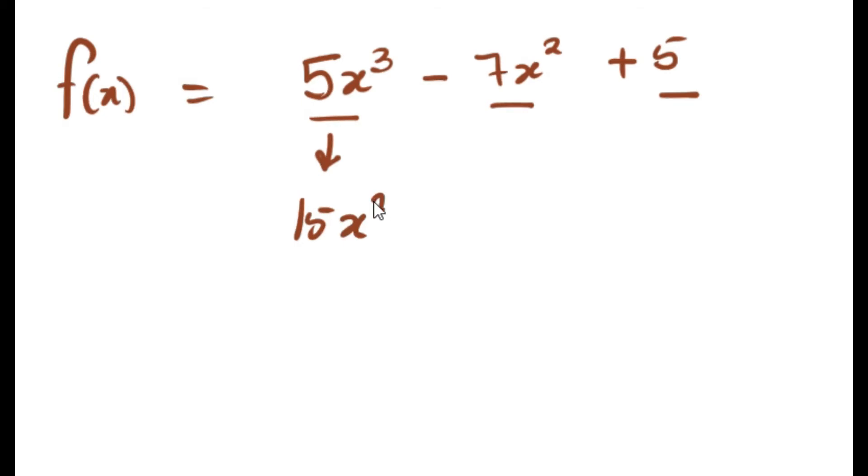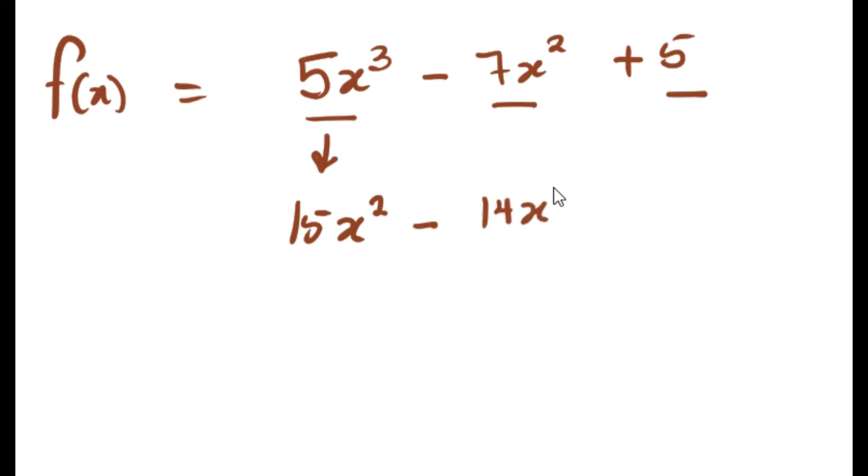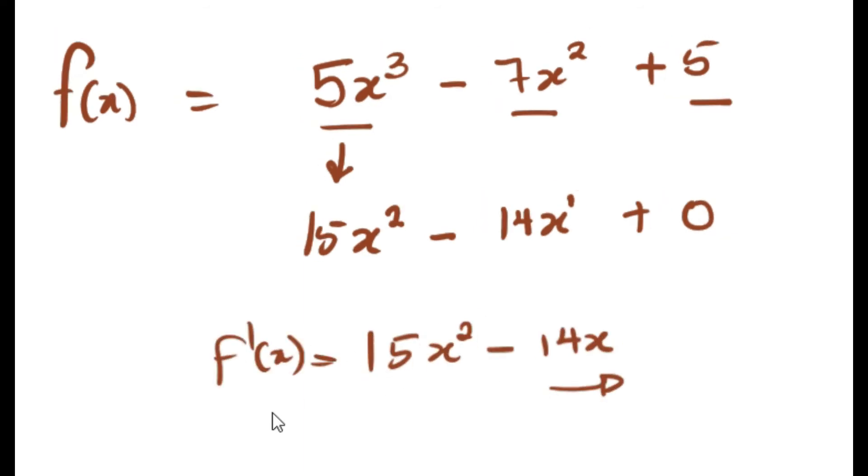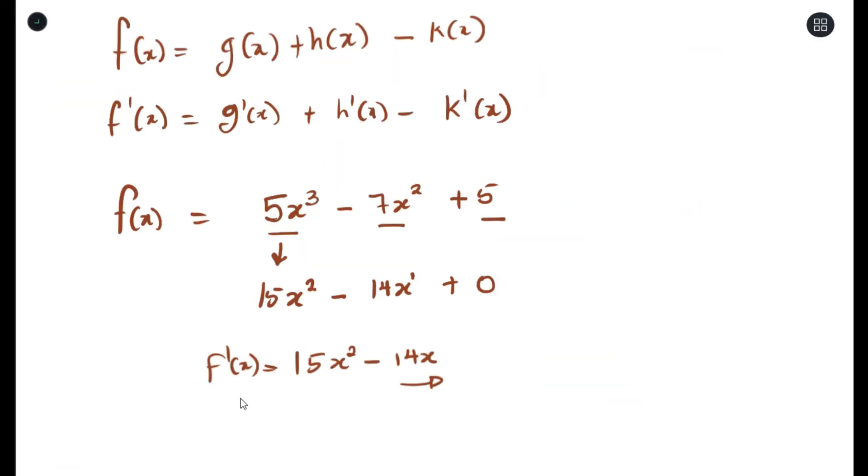The same thing for this: you multiply 7 times 2 which gives you 14, then you subtract 2 from 1 and that's 1. And since the derivative of any constant is always zero, this is just zero. Writing this properly, this would be the derivative of your function.